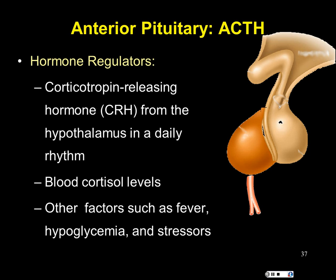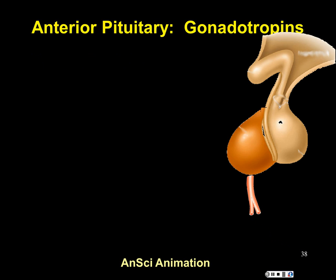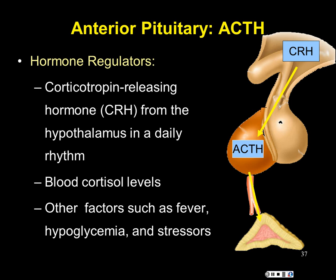Complete this control pathway on your handout: from the hypothalamus, CRH enters the portal system, binds to cells of the anterior pituitary to release ACTH, which enters the blood and targets the adrenal cortex. On the image, the cortex is the yellow portion — specifically the outside. It triggers the release of steroid hormones, which we can call corticosteroids — steroids from the cortex.